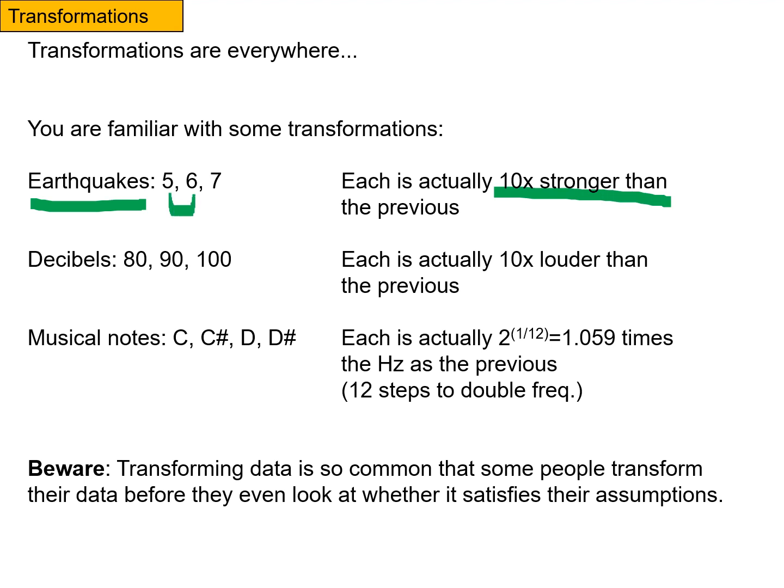So a 6 is 10 times stronger than a 5, a 7 is 10 times stronger than a 6, and a 7 is actually 100 times stronger than a 5.